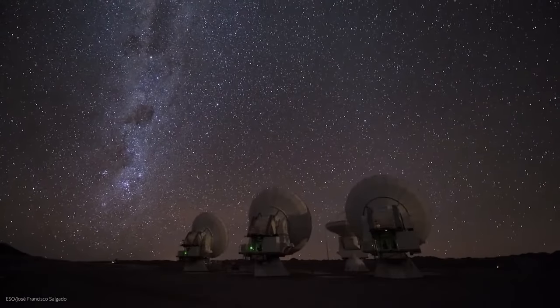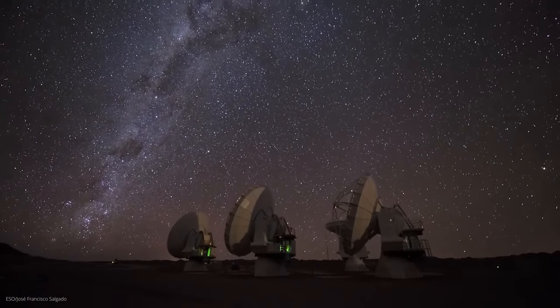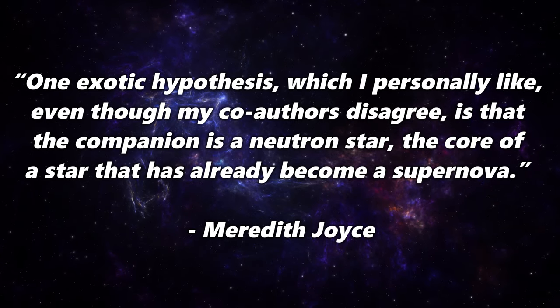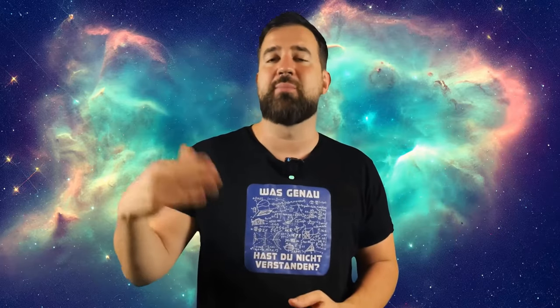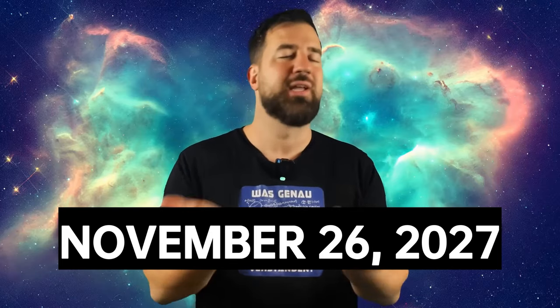There are even some really outlandish hypotheses out there. As curator Meredith Joyce says, one exotic hypothesis which I personally like, even though my co-authors disagree, is that the companion is a neutron star, the core of a star that has already become a supernova. So we should definitely check again, and the researchers have even calculated specific observation times. The next opportunity to observe the companion star at the edge of Betelgeuse will be on November 26th, 2027. So you can mark it in your calendar.